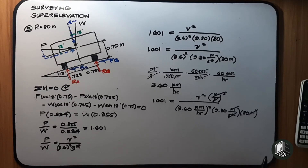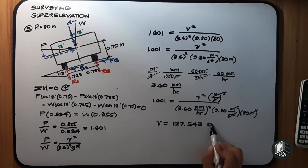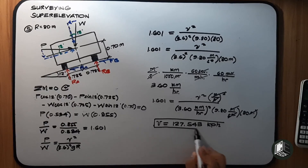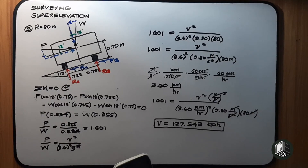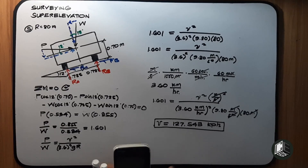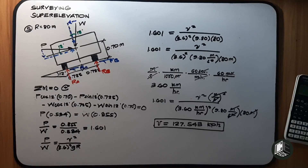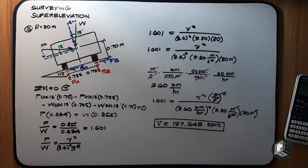The velocity comes out to 127.543 km/hr. That is quite fast — the maximum speed on an expressway is only 100 km/hr. Verification: √(1.601 × 3.6² × 9.80 × 80) = 127.543 km/hr. That concludes our super elevation examples. The next topic will be spiral curves. Thank you for watching!